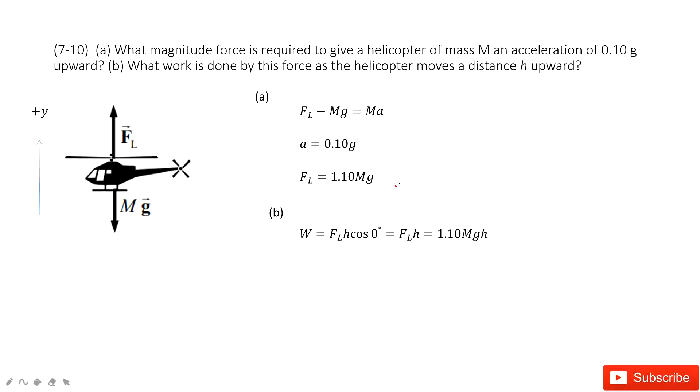In this one, we will talk about work and energy in chapter 7. So we can see we have the helicopter there, and then the mass is given, the acceleration is given, and it tells you the acceleration is upward.